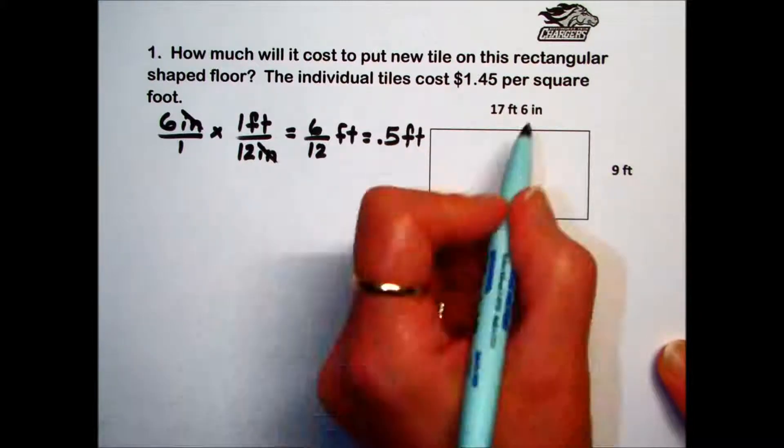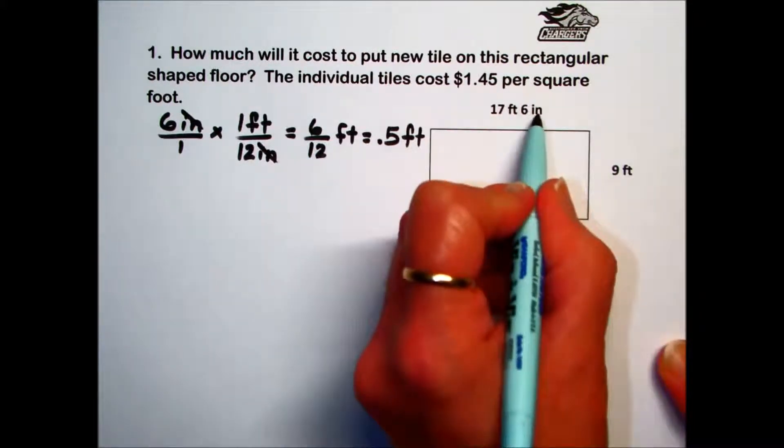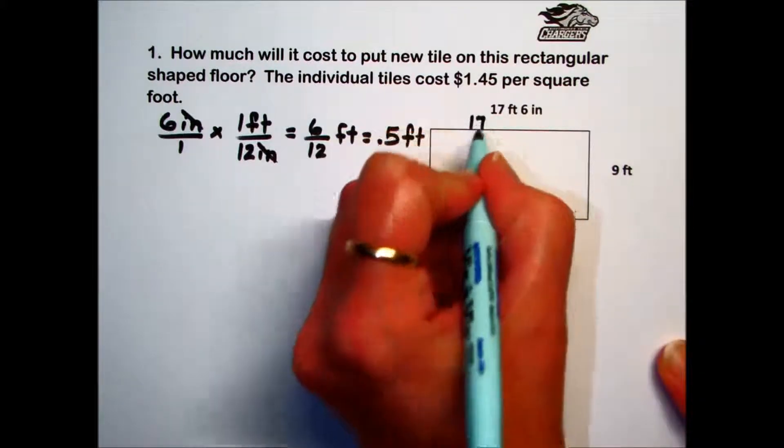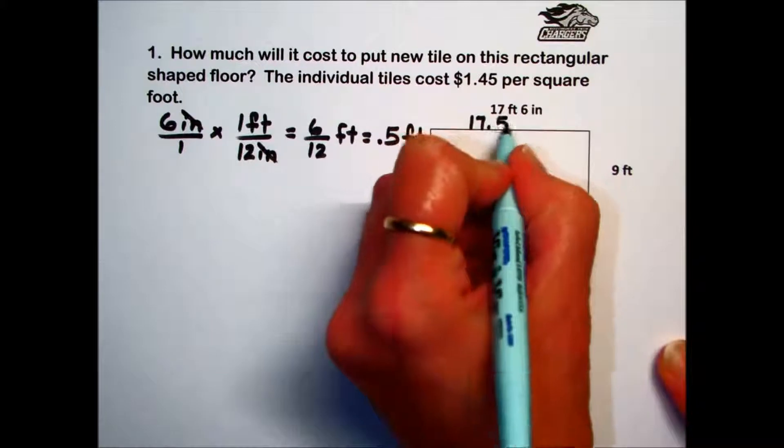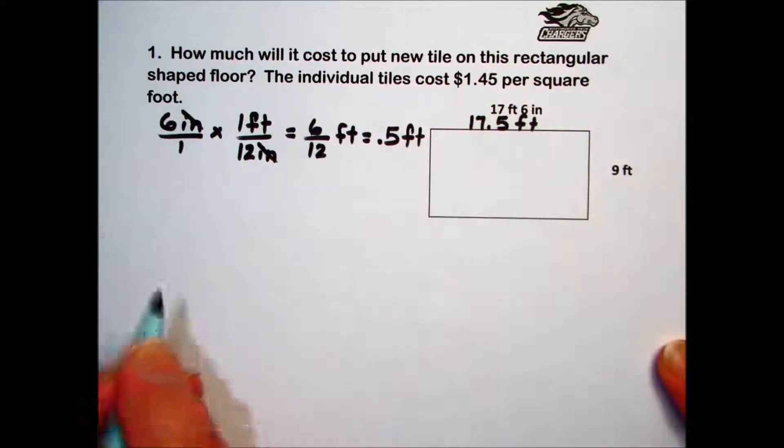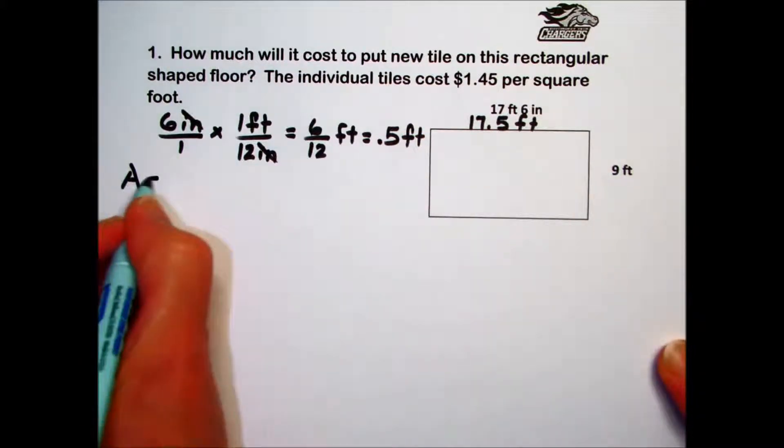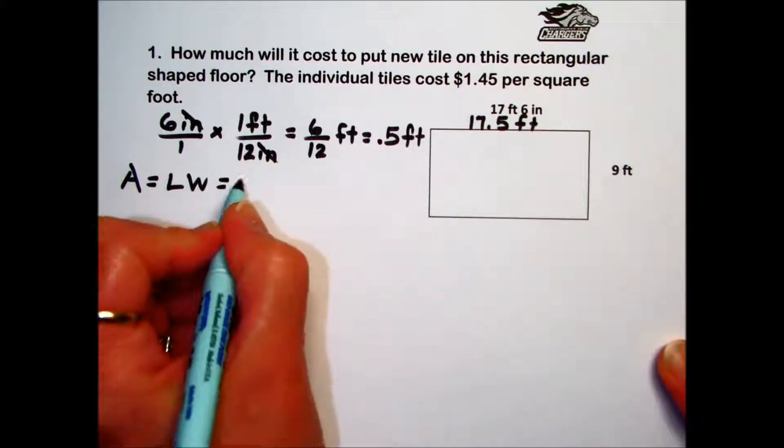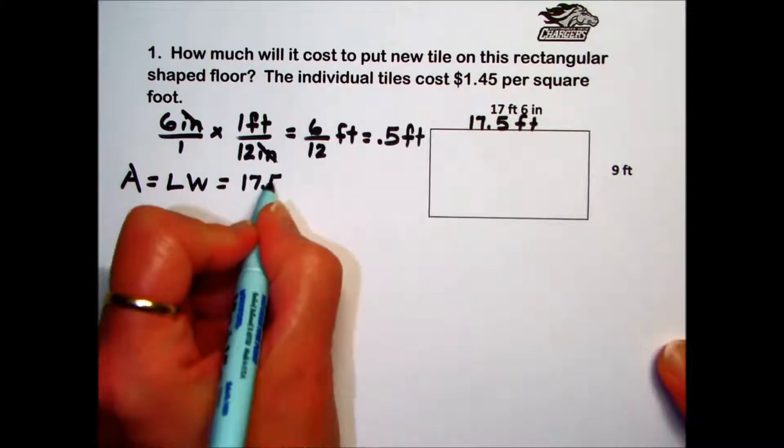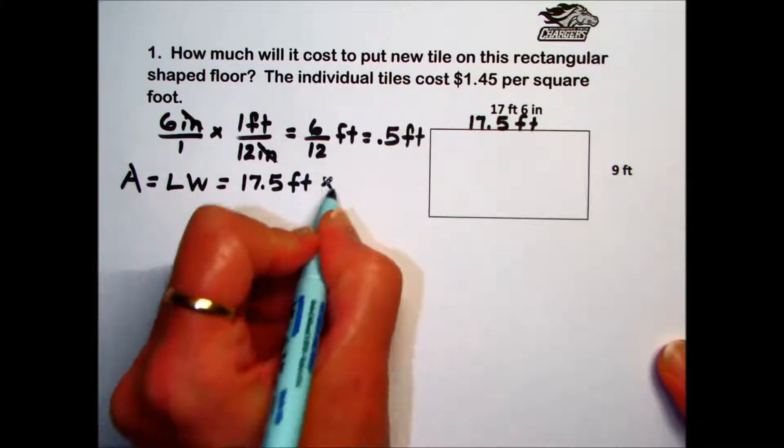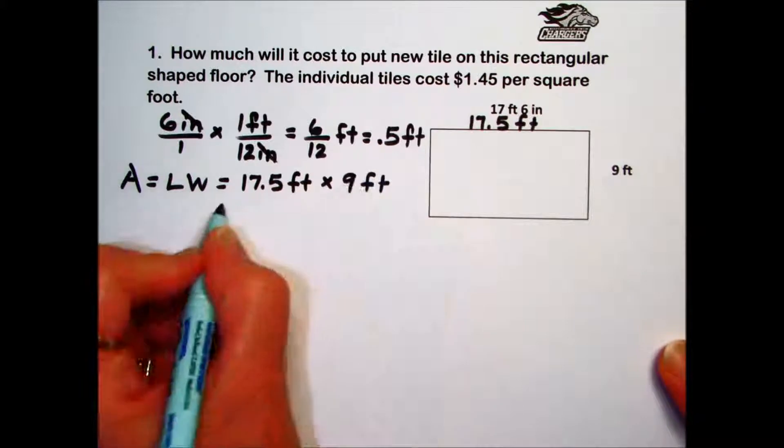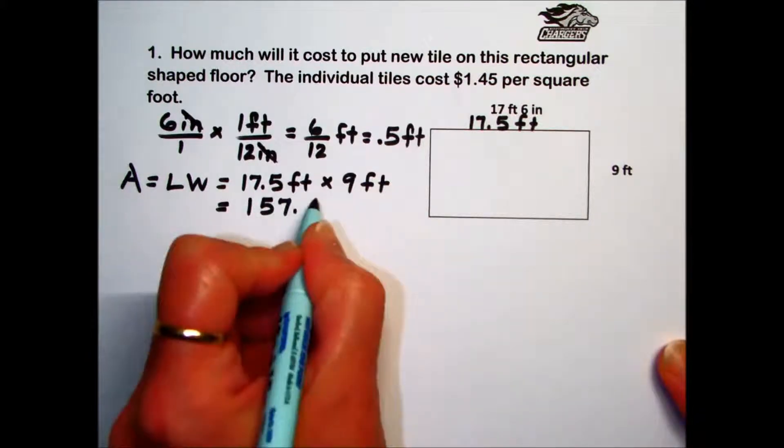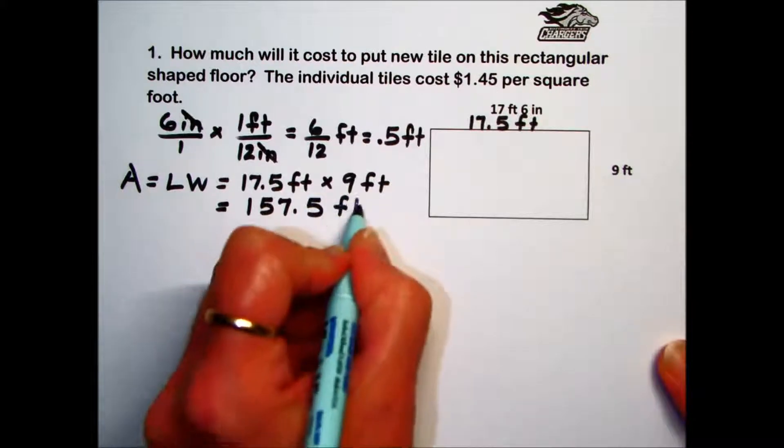Then replacing the 6 inches with half a foot, 17 plus half a foot gives us a value of 17.5 feet for our length. We're now ready to find the area of the rectangle. The formula for the area of a rectangle is length times width. We'll take our 17.5 feet and times it by the width 9 feet. That gives us an area of 157.5 feet times feet, or feet squared.